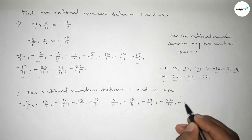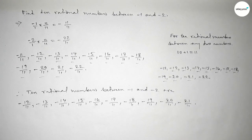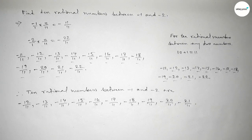So this is the process to find out 10 rational numbers between minus 1 and minus 2. That's all. Thanks for watching. If this video is helpful to you, please share it with your friends. Please like, share, and comment.